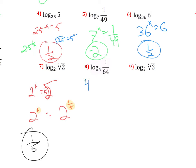So, x would equal 1 5th. And number 8, 4 to what power is 1 64th? Well, I know 4 to the 3rd power is 64, but it got flipped to the bottom, so it's going to have to be a negative exponent. And just as a reminder, negative exponents flip things across a fraction line.